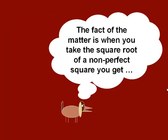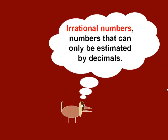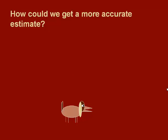The fact of the matter is, when you take the square root of a non-perfect square, you get something called an irrational number, a number that can only be estimated by decimals. In fact, irrational numbers are decimals that go on literally forever.